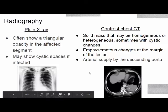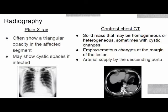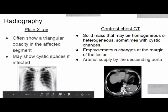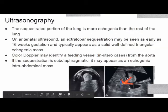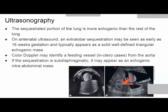Diagnosis by plain X-ray often shows a triangular opacity in the affected segment, sometimes with cystic spaces if infected. CT shows a solid mass, homogeneous or heterogeneous, sometimes with cystic or emphysematous changes at the margin, and the arterial supply from the descending aorta can be identified. On antenatal ultrasound, the sequestrated portion is more echogenic than the rest of the lung. Extralobar sequestration may be seen as early as 16 weeks as a solid, well-defined, triangular echogenic mass. Color Doppler can identify the feeding vessel from the aorta.